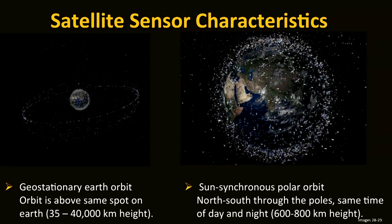Images collected from geostationary satellites, shown in the orbit on the left, tend to have much larger pixel sizes, but we can collect images every 15 minutes to half an hour. These satellites are typically 30 to 40 thousand kilometres above the surface of the Earth, and they stay looking at the same point on the surface.